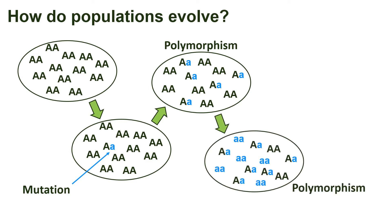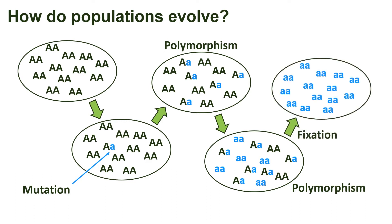Sometimes this process will continue and a previously rare allele can become the new common allele, while the original allele becomes the rare one. This can occur when the mutant allele is advantageous due to natural selection, but it can also occur just by random chance via a phenomenon called genetic drift. Either way, the polymorphism persists. If the process continues until the lowercase a allele reaches a frequency of one, we term this fixation and say that the allele has fixed in the population. The population has changed from everyone having the capital A allele to everyone having the lowercase a allele. The correct word for this change in the wild-type allele is substitution. The substitution is the evolutionary change in the population, while the mutation was just the initial spark that made it possible.